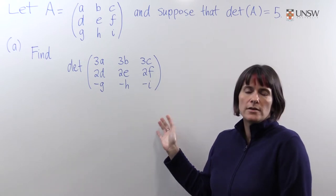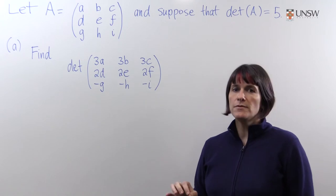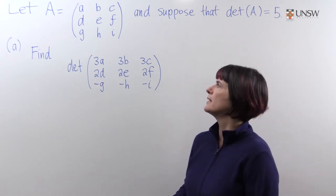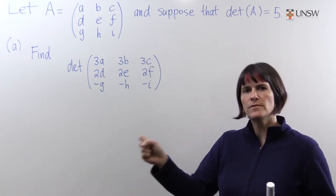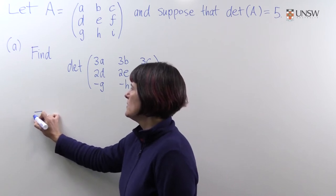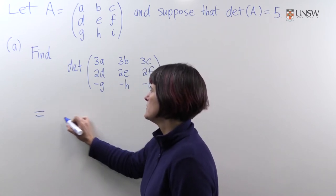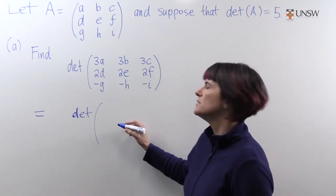And now we want to find the determinant of this matrix, which is similar to A, but we can see each of the rows has been multiplied by something. So first we'll turn the first row into the first row of A, which means we'll divide that first row by three.